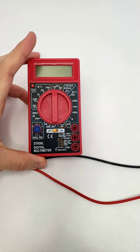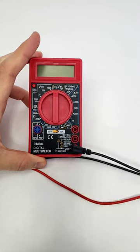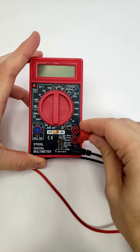To measure DC voltage with a multimeter, plug the black probe into the port labeled COM and the red probe into the port labeled V.